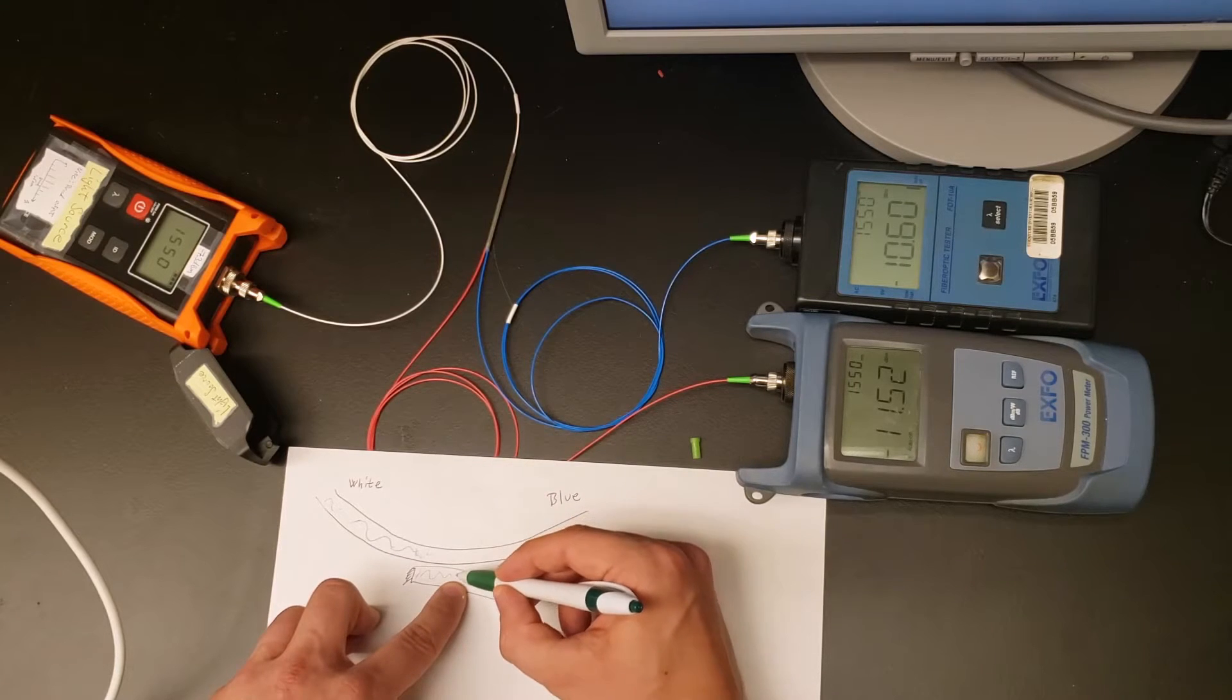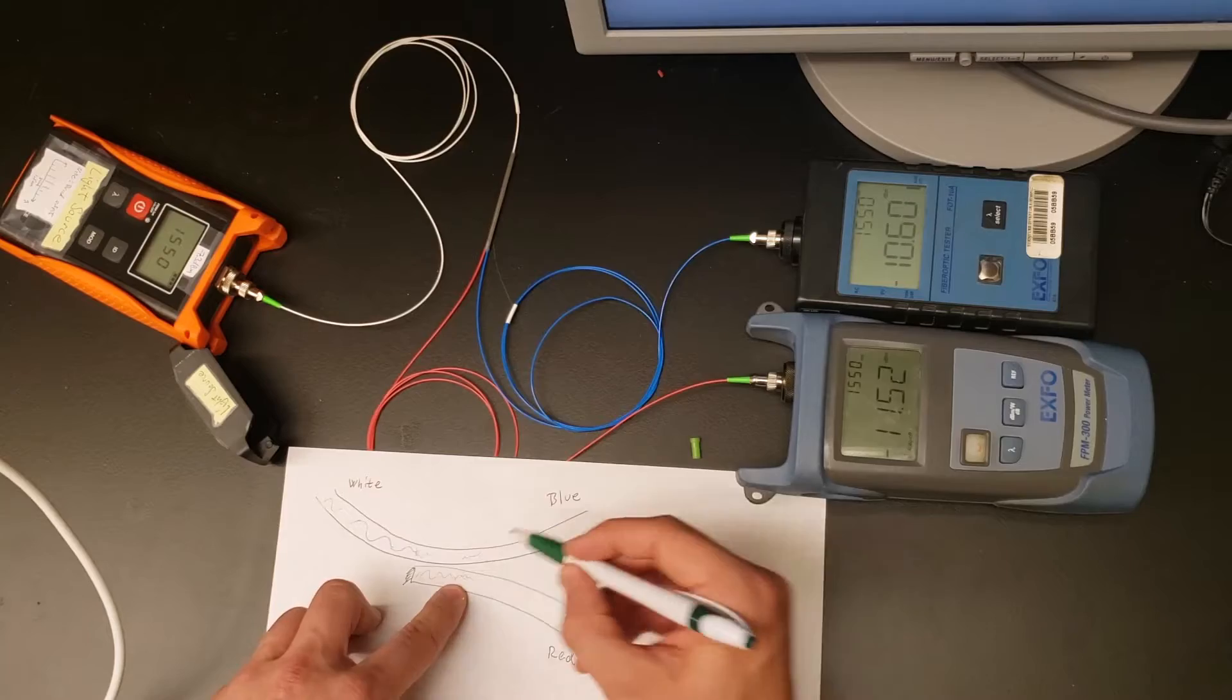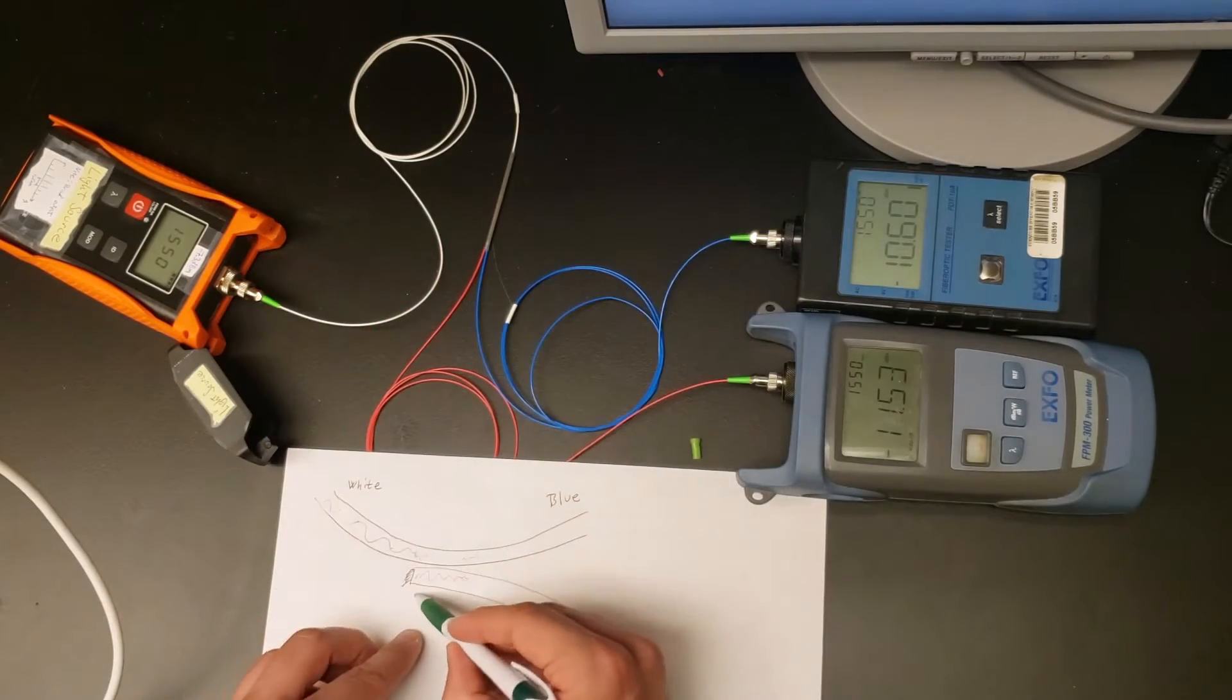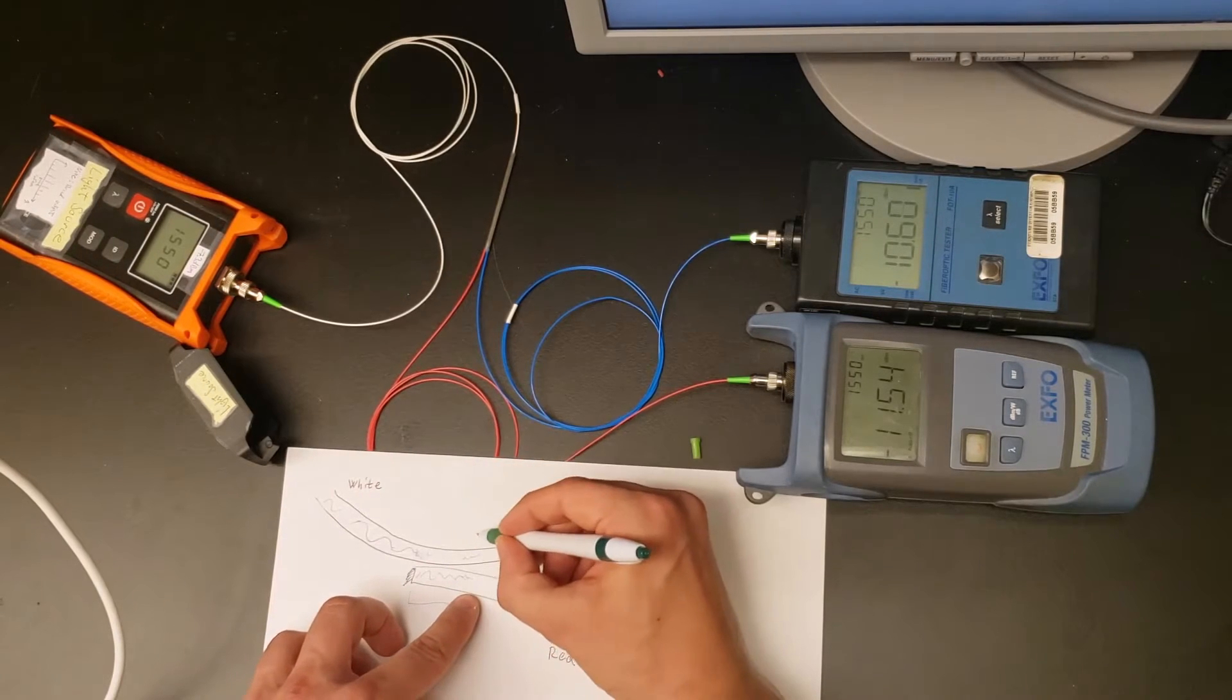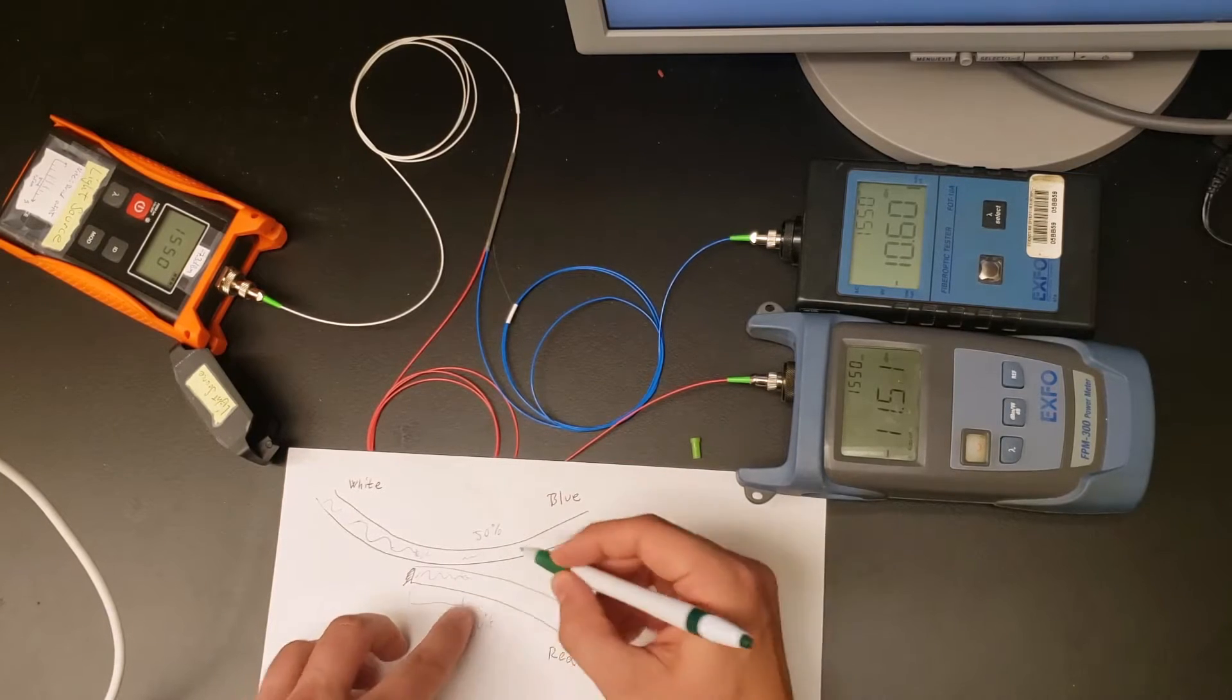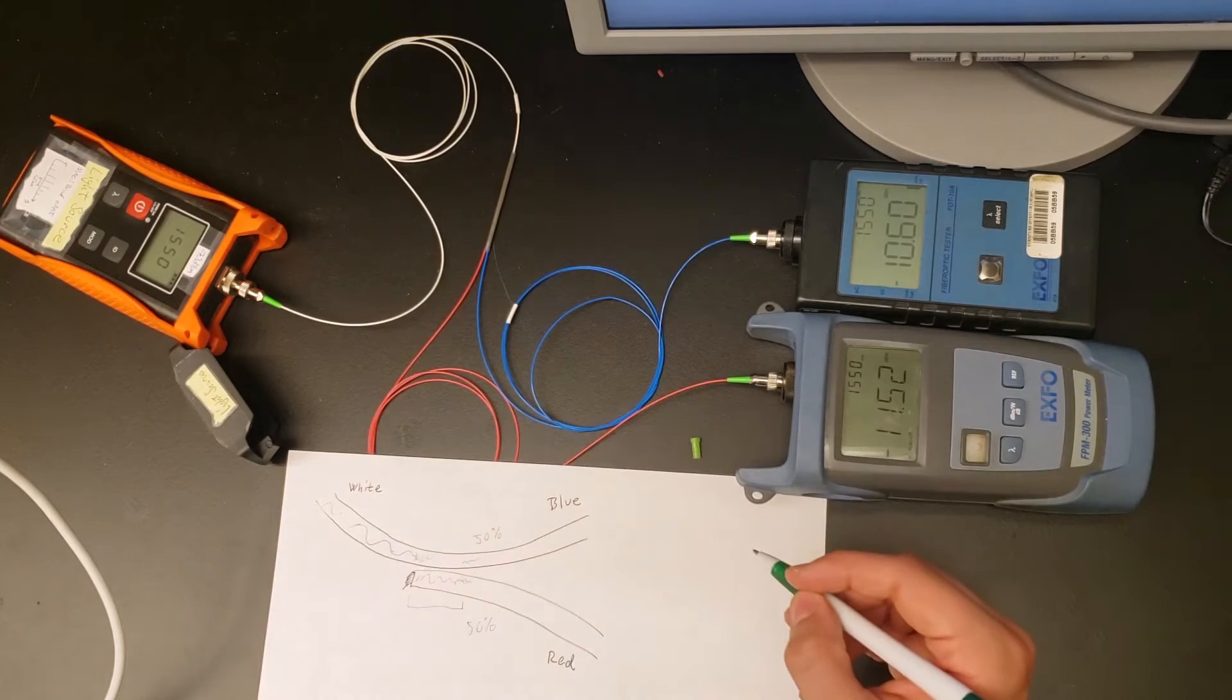As we propagate forward, more power transfers over. At some point all the power is in this branch, then it begins to transfer back. This structure has been engineered so the coupling length is exactly long enough that we have around 50% power here and 50% power here when they diverge, giving 50% power out each port.